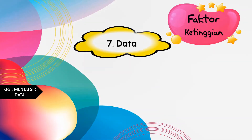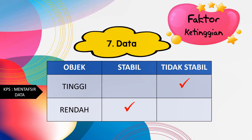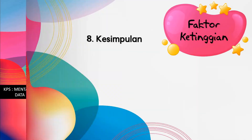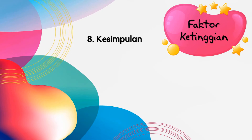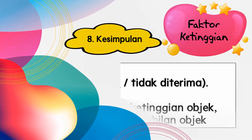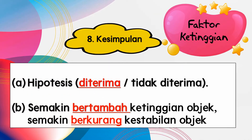Kita akan menulis data. Kemahiran proses sainsnya ialah mentafsir data. Objek yang tinggi tidak stabil, objek yang rendah stabil. Kesimpulannya adalah hipotesis diterima, iaitu semakin bertambah ketinggian objek, semakin berkurang kestabilan objek.